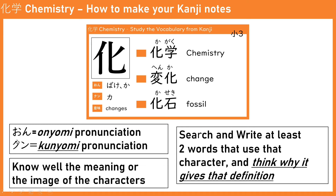Kunyomi, which I wrote in katakana, refers to the reading based on the Chinese reading. So if you have learned Chinese before, the reading might look like kunyomi rather than onyomi. In this video, since we are going to learn vocabulary where most words use two or more kanji, we are using lots of kunyomi.